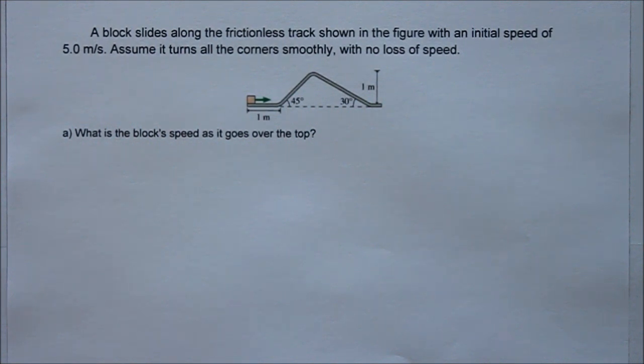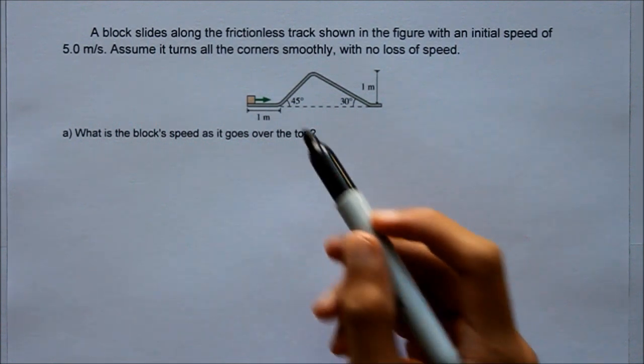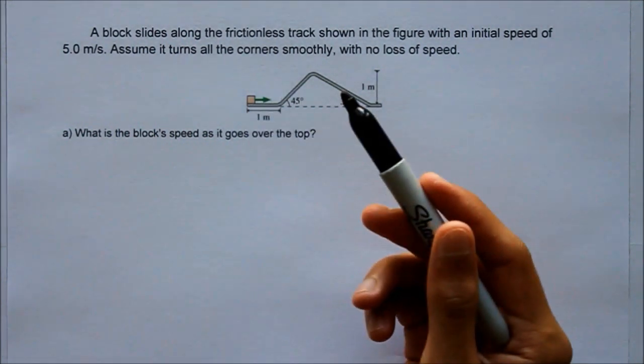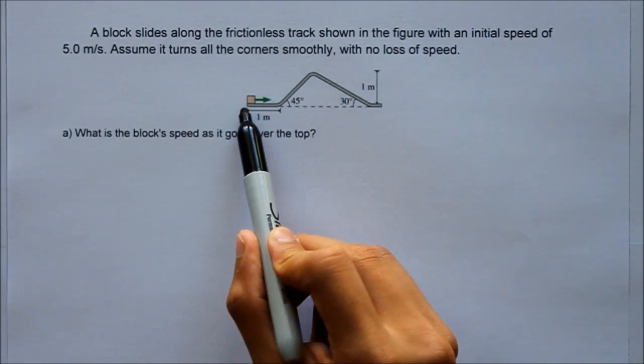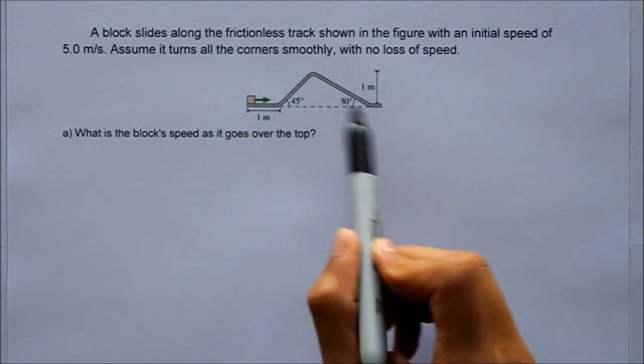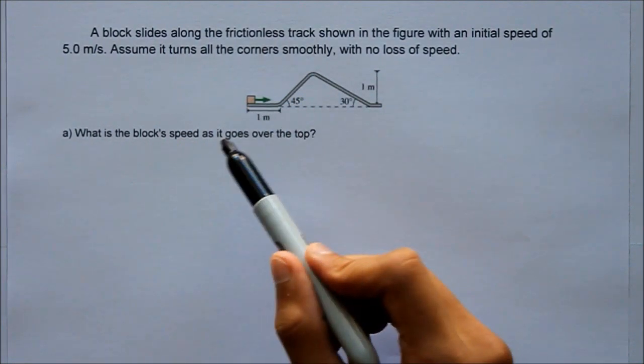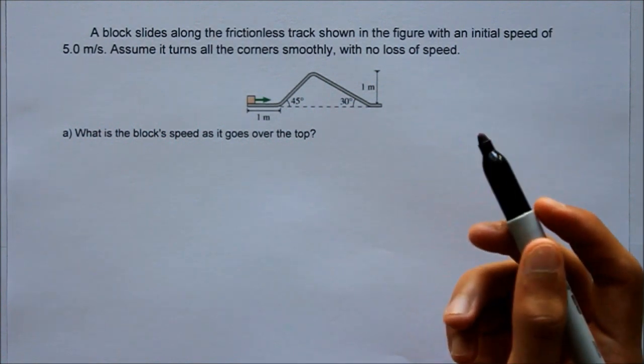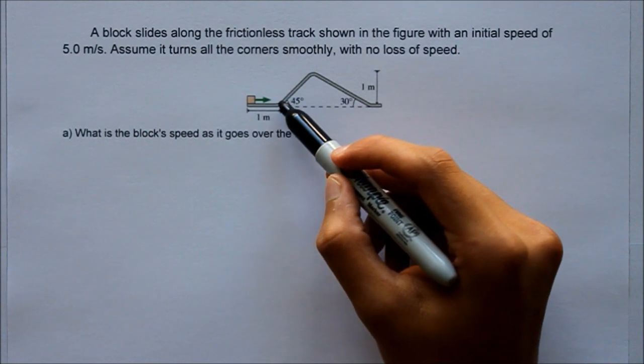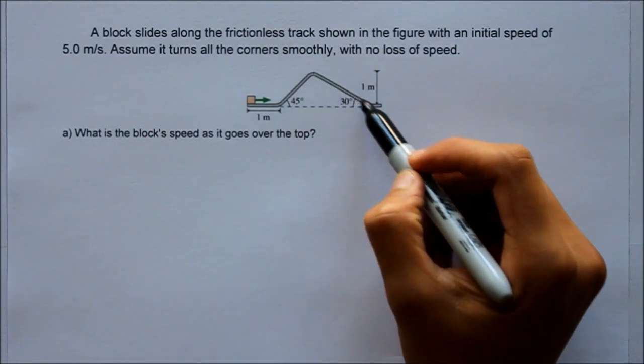The first thing I like to do when I approach a question is just look at all the knowns that they give us and start thinking about what variables I'm going to have to solve for. So immediately I can see that they've got this block, it's a pretty solid representation of a block, and they say while it's on the track, it's not going to lose any speed from the track because it's frictionless. So the only thing that's going to slow this block down is going to be gravity. And that's going to occur when it goes up and then when it goes down.